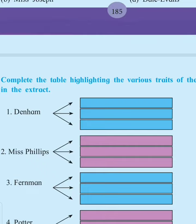First one: Denham. What are his special qualities? How can you describe him? He was blunt, was critical, he was confident and courteous. Next one is Miss Phillips. She was cool, also honest, authoritative, and smart.